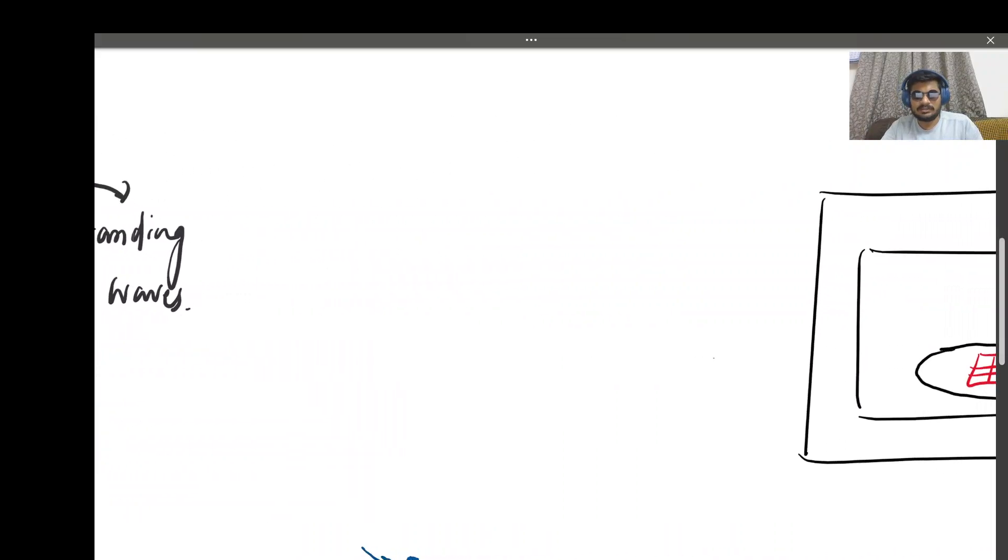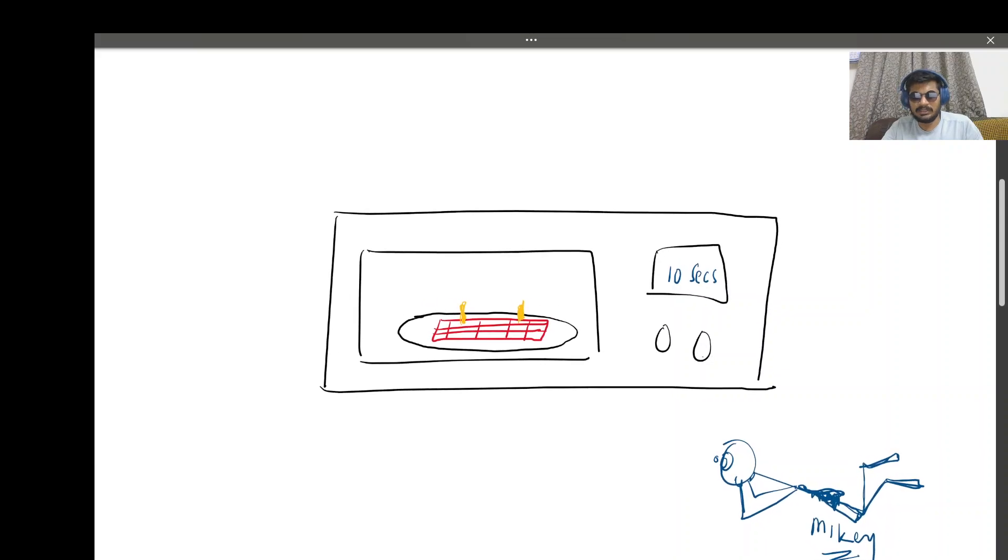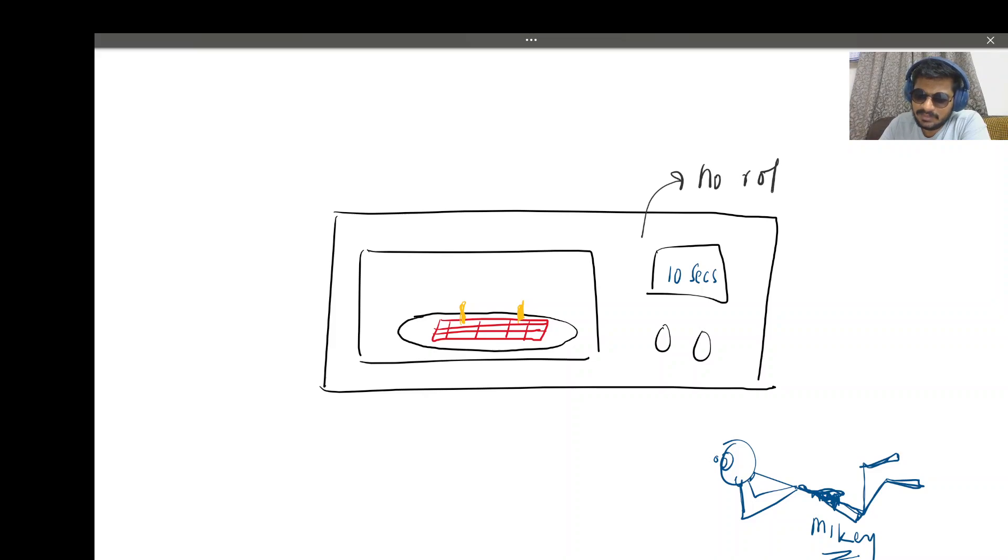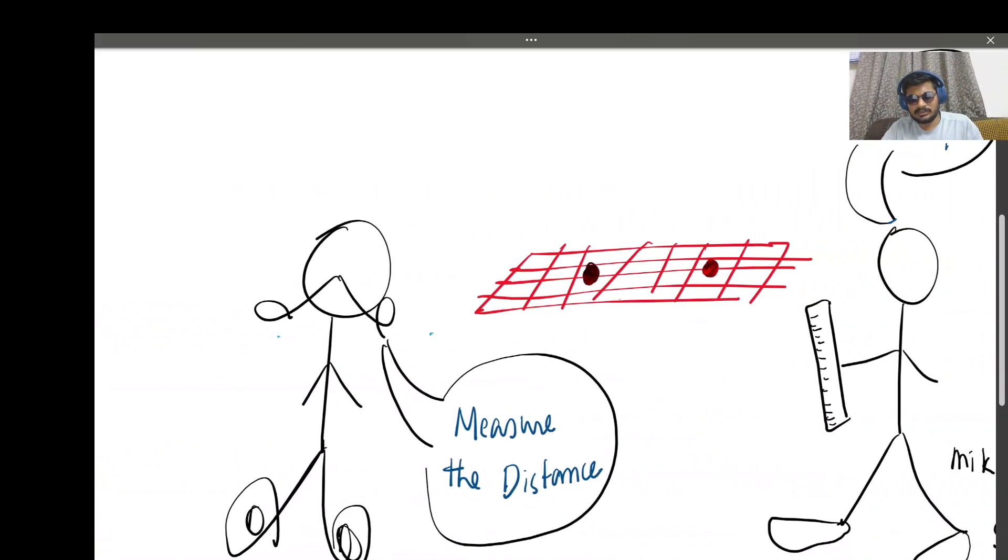I tell Mikey to set a chocolate bar inside a microwave and stop it from rotating - no rotation. Once there's no rotation, set the time to 10 seconds. Mikey waits with hunger - he likes chocolates. You'll notice that wherever there are hot spots, there will be little melting within 10 seconds.